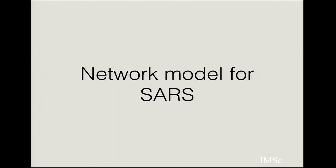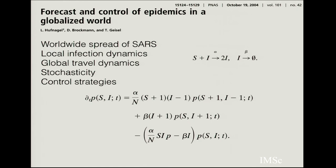Now I want to get into some specific examples of networks. There is a paper by Hufnagel, Brockmann, and Geisel — a PNAS paper from 2004 — that looks at the worldwide spread of SARS, which is Severe Acute Respiratory Syndrome, a viral disease that spread in the early 2000s. The assumption is local infection dynamics following a standard SIR model: susceptible and infected individuals interact to produce more infected, and infected individuals recover and are removed from the population.